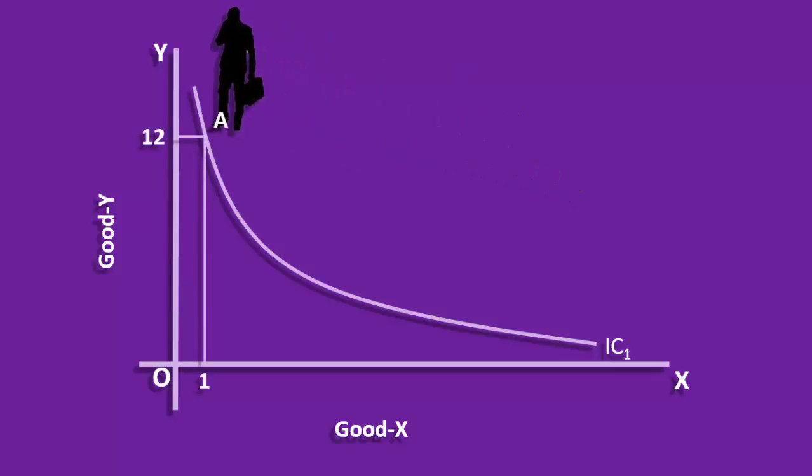When the consumer moves down from point A to B, he parts with four units of good Y. Against this, he gets one unit of good X. Giving away good Y means loss of utility. Getting one unit of good X means gain in utility. Gain balances the loss. Hence, the consumer's total utility remains unaffected. This process must go on along the curve if the consumer is to remain at the same level of satisfaction or utility.